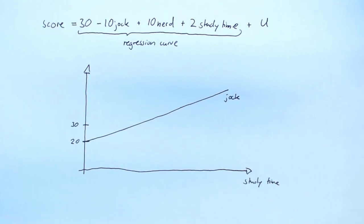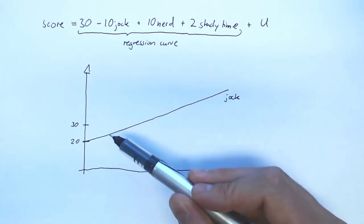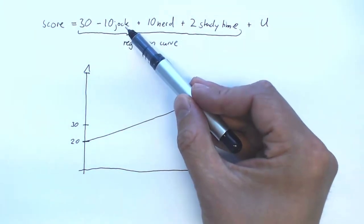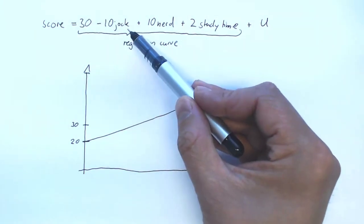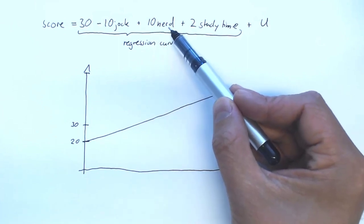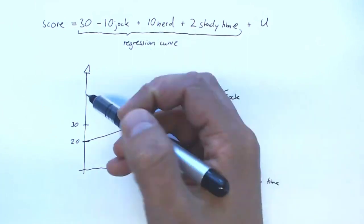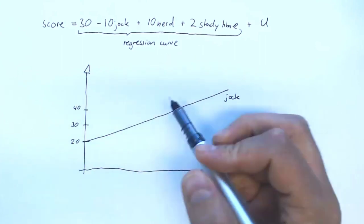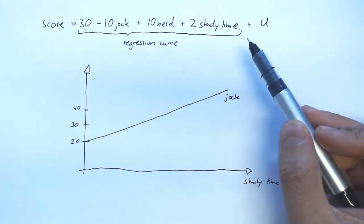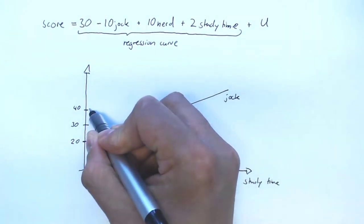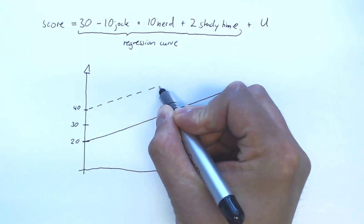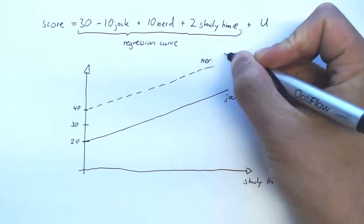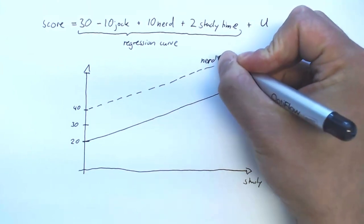Now if you're a nerd, you also start out at 30. You get minus 10 times jock, but jock is 0 for you as a nerd, so that doesn't change anything. But you are a nerd, so nerd is 1, so you get 10 times 1 extra. So you're at 40. And then you get 2 points for every hour that you studied. So this is the relevant curve for nerds.